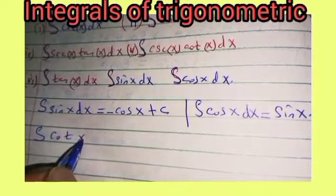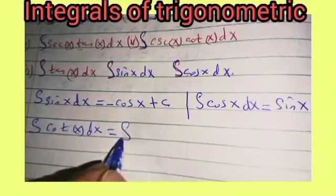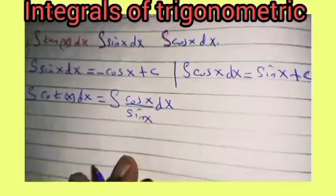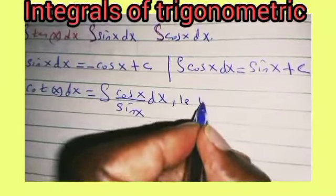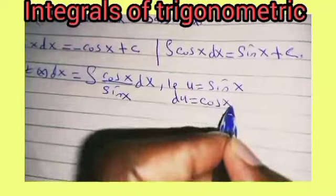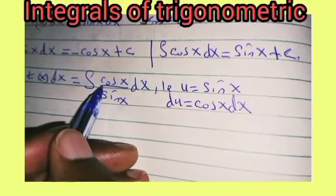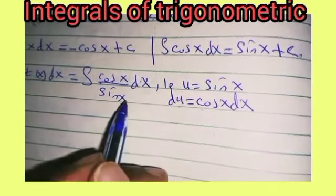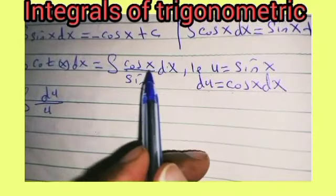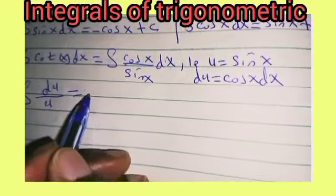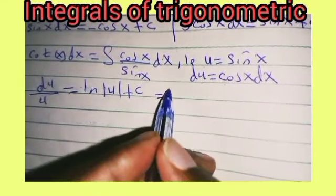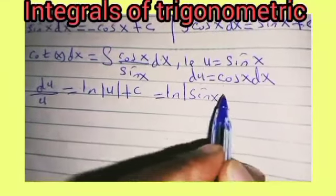For example, we start with the integral of cot of x dx. We are going to write it as the integral of cos of x divided by sine of x dx. We integrate this by letting u equal to sine of x, so that du equals cos of x dx. Then we substitute: instead of cos of x dx we write du, and instead of sin of x we write u. So we get the integral of du divided by u, which is equal to the natural logarithm of |u| plus constant c.